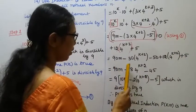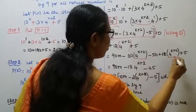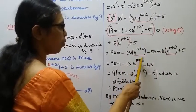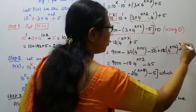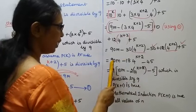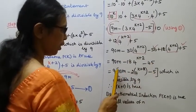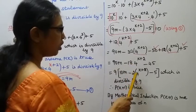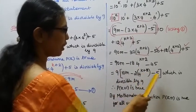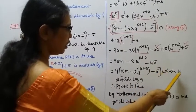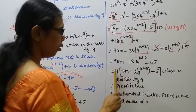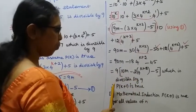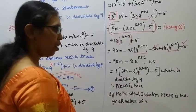90m, taking like terms, minus 30 plus 12 is minus 18, 4 power k plus 2. Minus 50 plus 5 is minus 45. 90 minus 18 minus 45, taking 9 common, equals 9 into 10m minus 2 times 4 power k plus 2 minus 5, which is divisible by 9. P(k+1) is true.